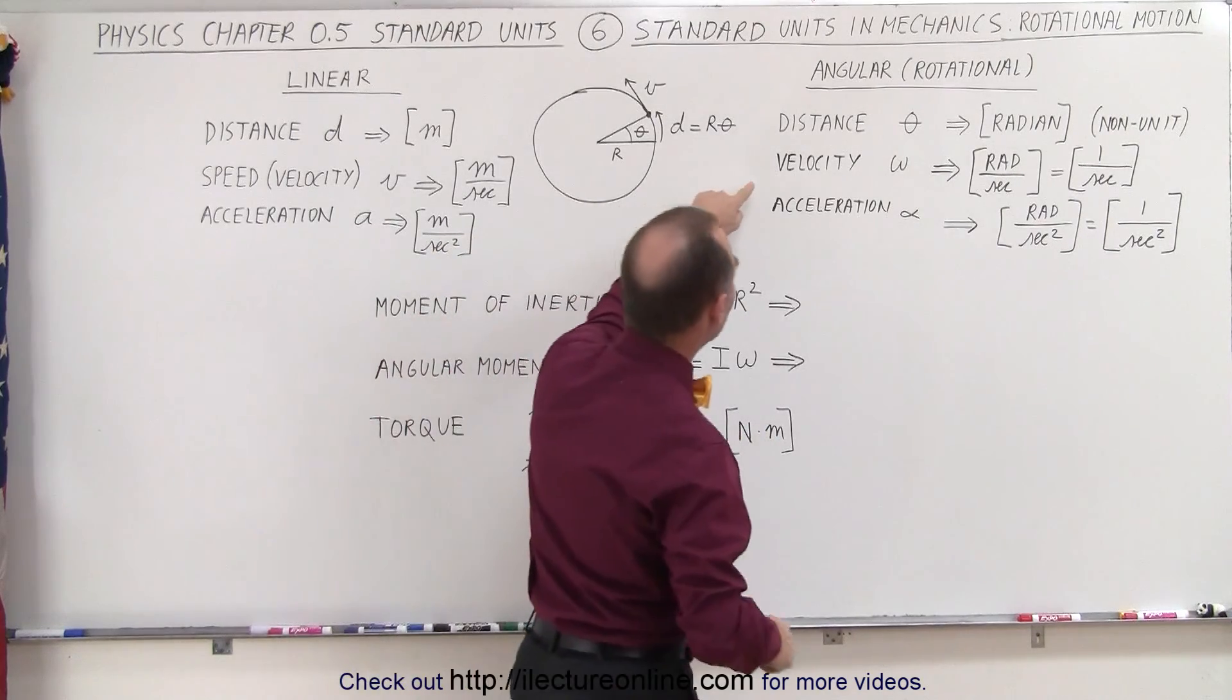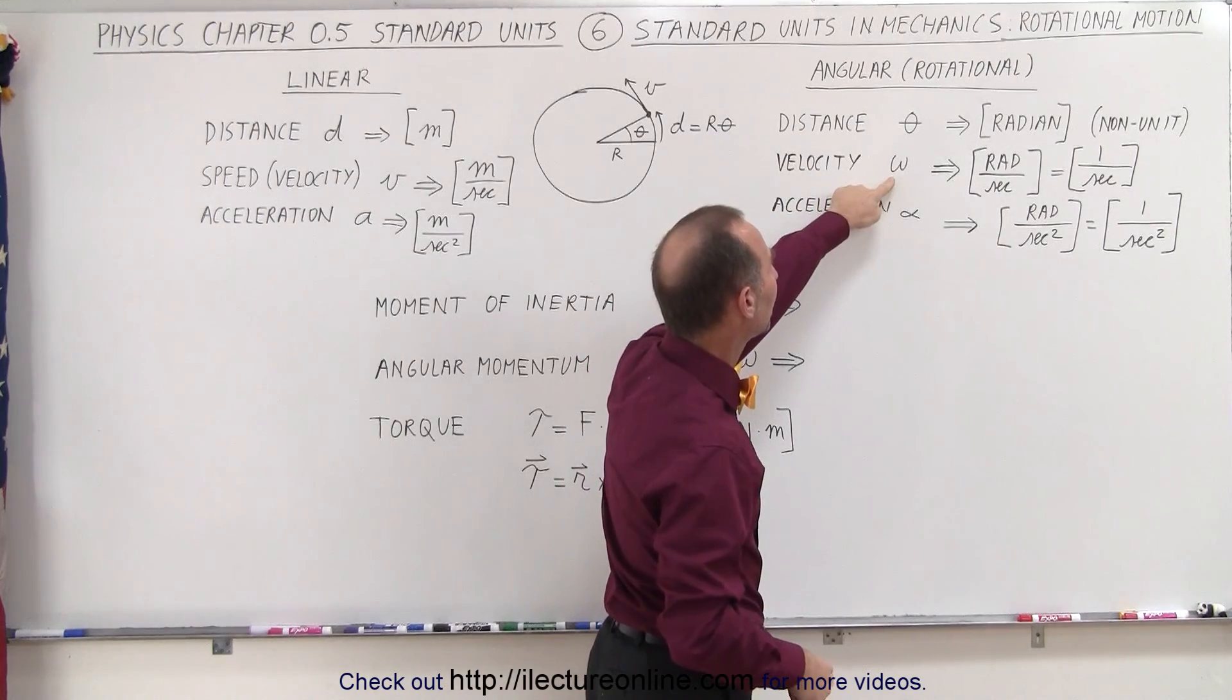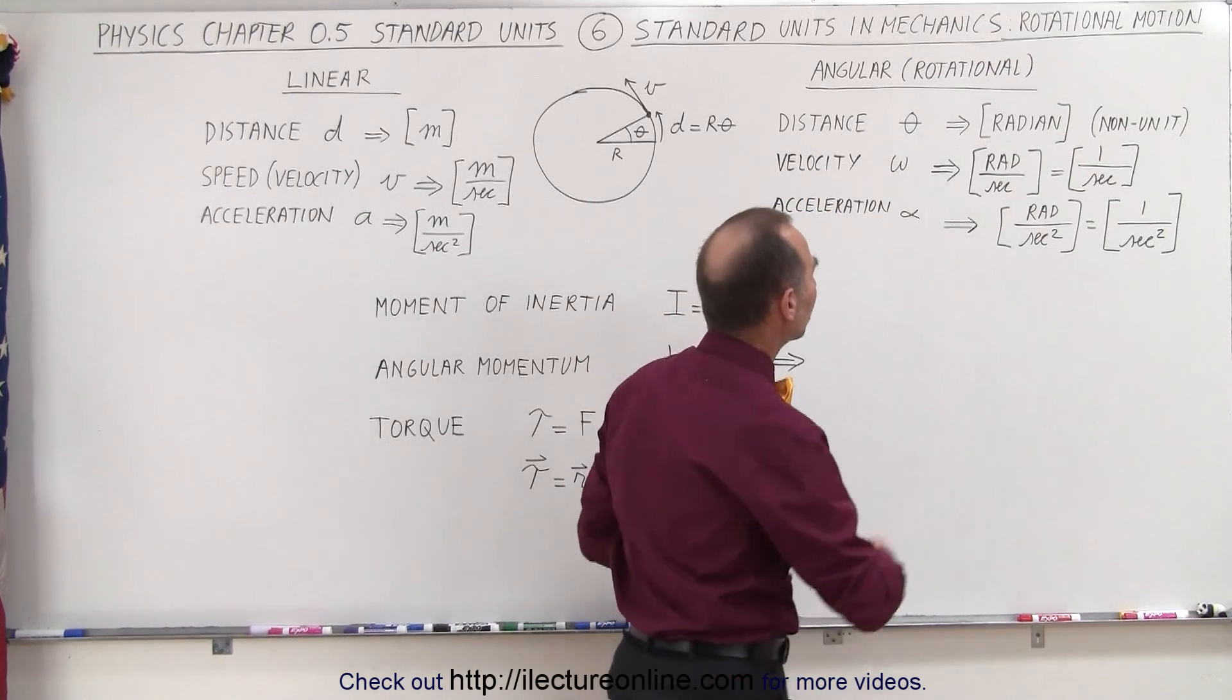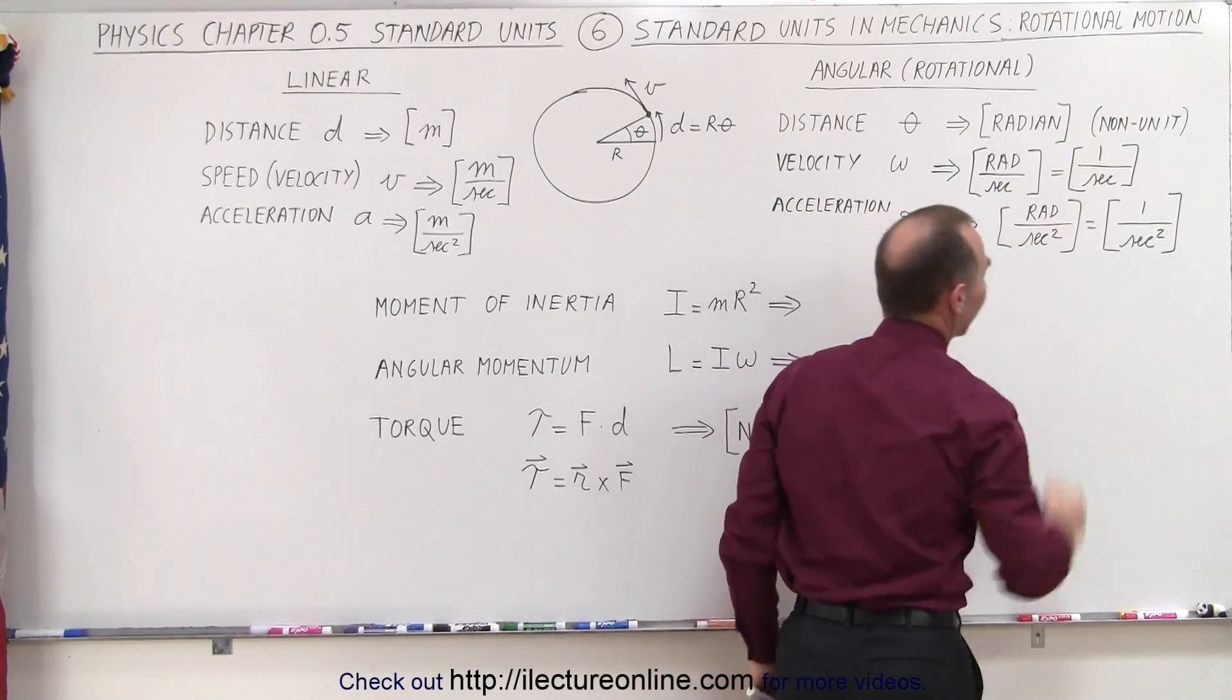That's evident when we start talking about angular velocity. We use the symbol omega, and the units are radians per second, but in essence we should write 1 over second.